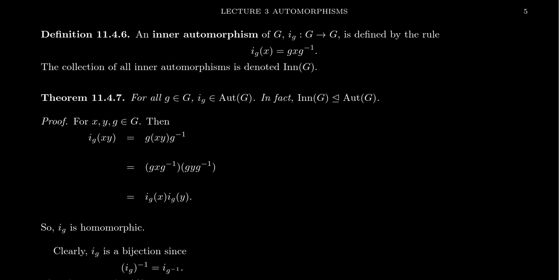In this lecture series, we pretty much always stick with left actions, but you can get away with either one — it doesn't make much of a difference. If you switch from the left action to the right action, you're just switching from an element to its inverse, so it makes no big difference whatsoever. The collection of inner automorphisms is often denoted as INN of G.